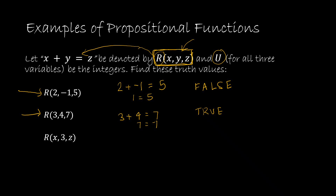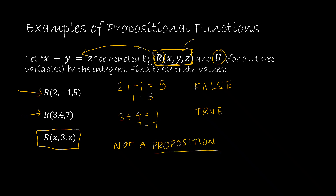For the last example, r(x, 3, z) is still considered a propositional function, not a proposition. To go from a propositional function to a proposition, I have to give values to each variable, and here we have two variables — x and z — that are not yet assigned. So it is still considered a propositional function.